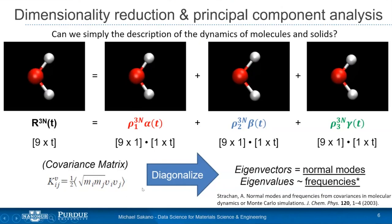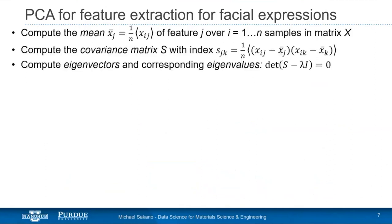This is essentially a normal modes analysis from chemistry or physics. By diagonalizing the covariance matrix we obtain two outputs: eigenvectors and eigenvalues. The eigenvectors relate to the normal modes — the concerted motions of individual features — and the eigenvalues relate to the frequencies. This simple example shows how dimensionality reduction works and follows the approach for principal component analysis.